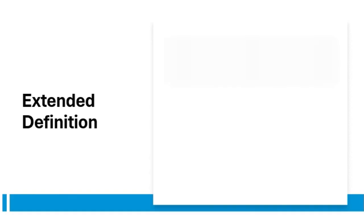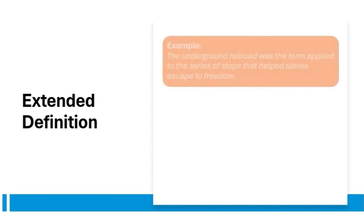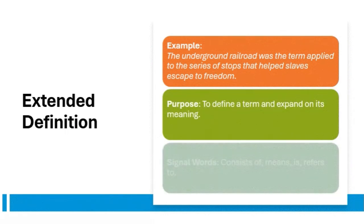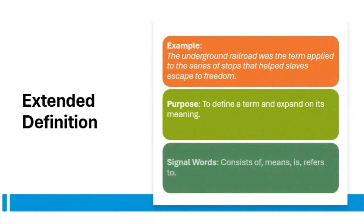Extended definition is another useful organizational method, especially when you need to explain a term or concept in depth. It's more than just a dictionary definition — you'll expand on the term and explore its meaning in a broader context. Take the Underground Railroad, for instance. You wouldn't just say it was a system of escape routes for slaves. Instead, you'd go on to describe how it operated, who was involved, and why it was so significant. The extended definition allows you to provide context and deeper understanding for your reader.